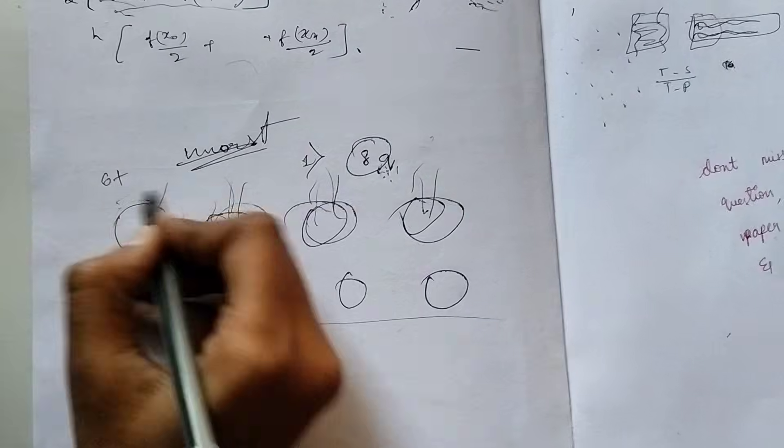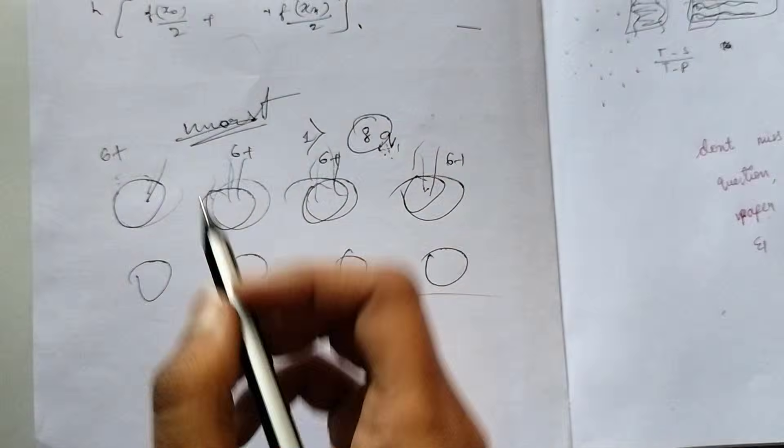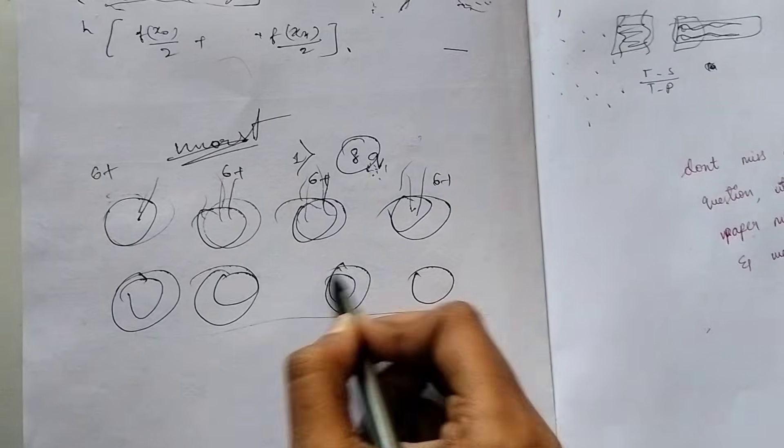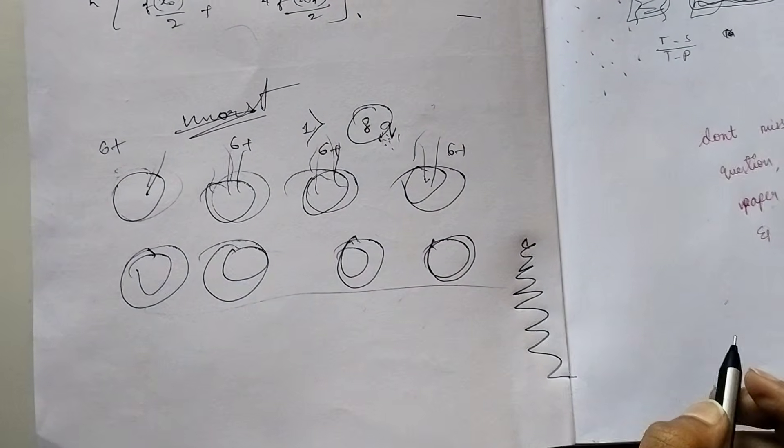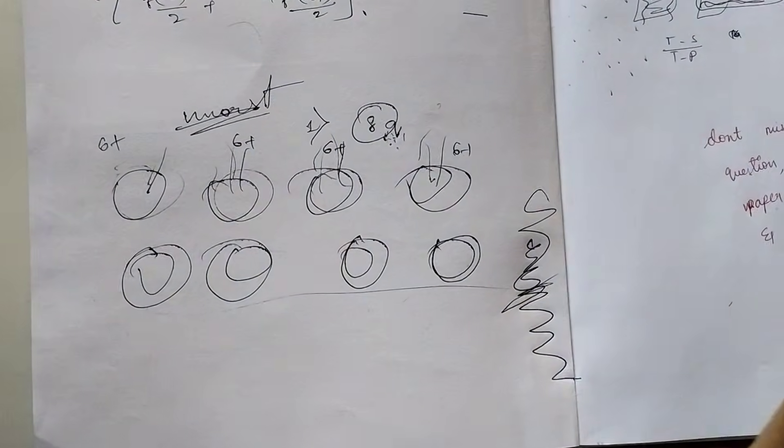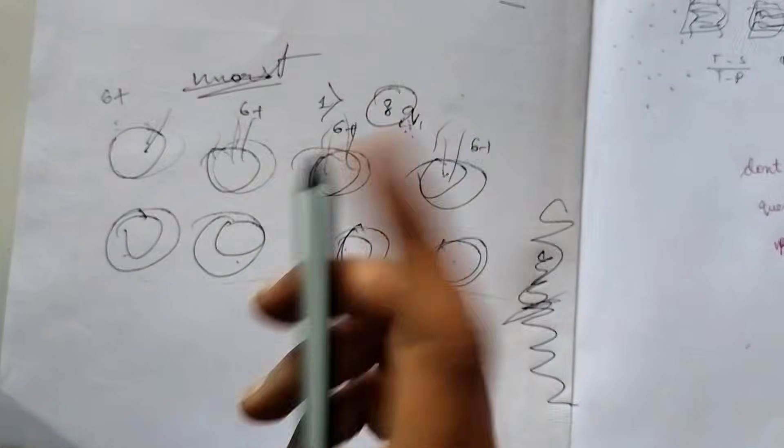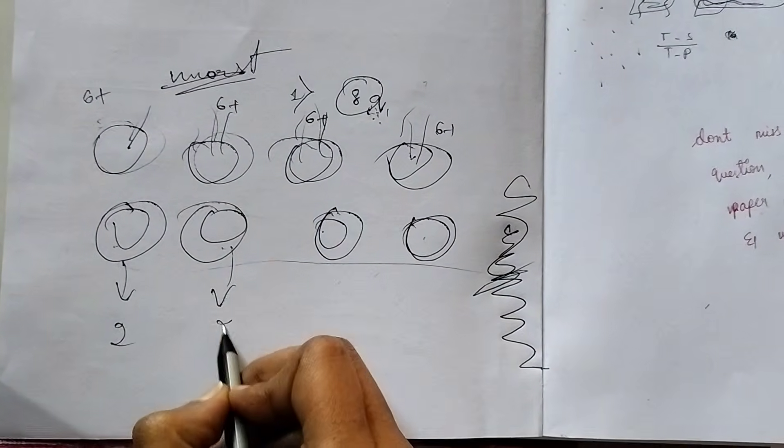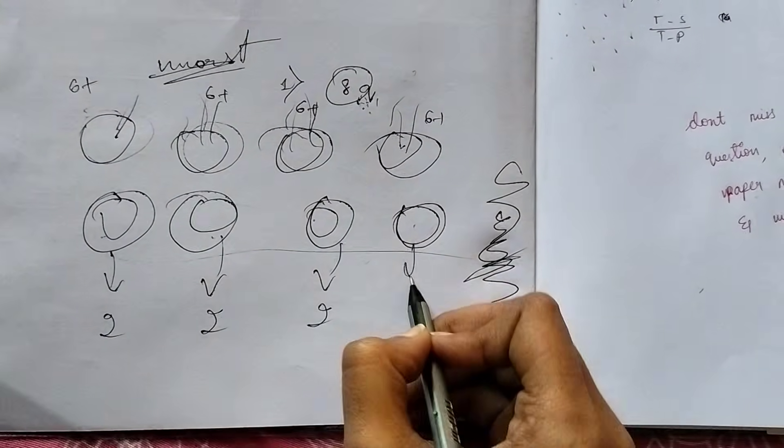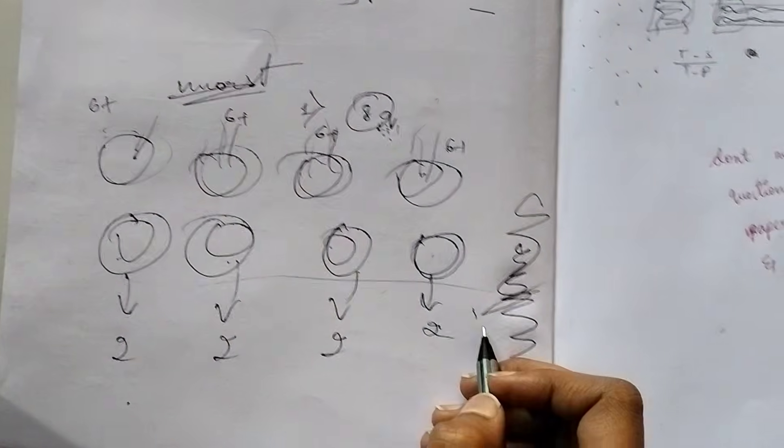And then choose some extra four questions for which you can write something relatable. Choose those four questions again and then you know what you have to do, right? Write it for two pages. I know you don't know anything about this, but create some story on your own and write.